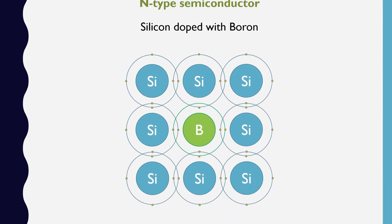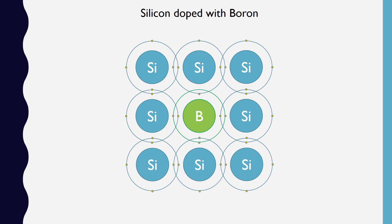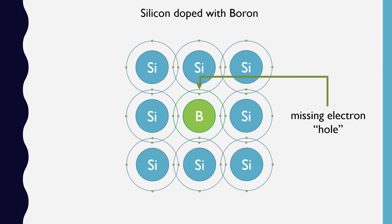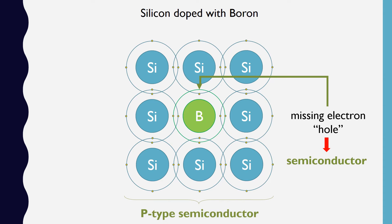Boron, on the other hand, has one valence electron fewer than silicon, so doping silicon with boron produces a structure with missing electrons, or holes. This is also a semiconductor, which we'll call a p-type semiconductor, or simply p-type material, because it can carry a positive charge.